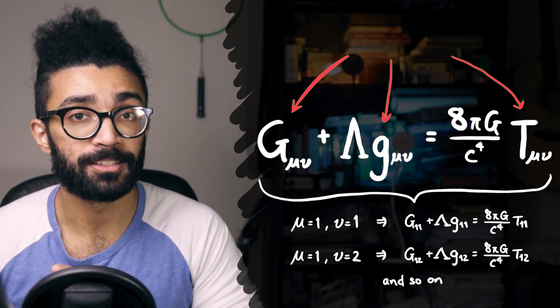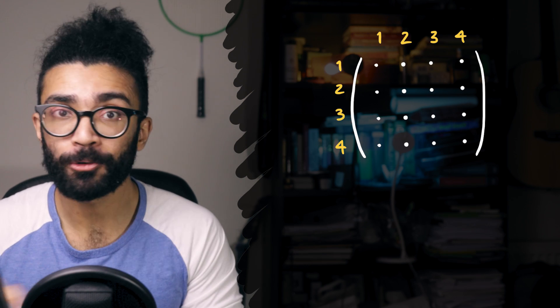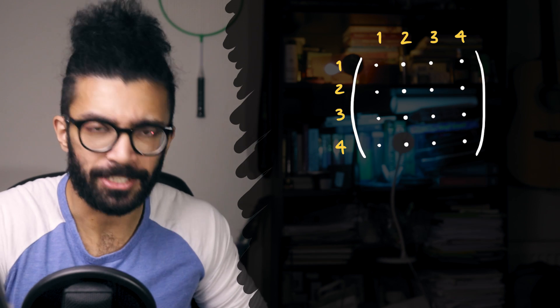Now, interestingly, the tensors referred to in Einstein's field equations are represented by four by four matrices, which means four rows and four columns. Now, rather annoyingly, but slightly usefully as well, there's a convention that gets used where we label the rows and columns as rows 0, 1, 2, and 3, and columns 0, 1, 2, and 3.